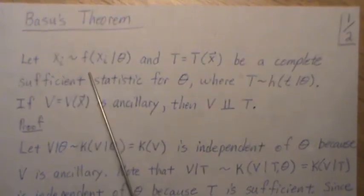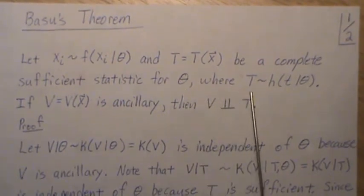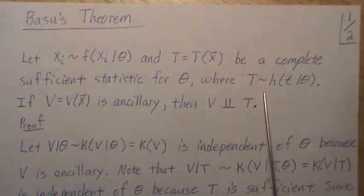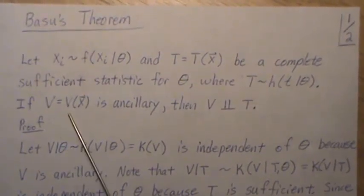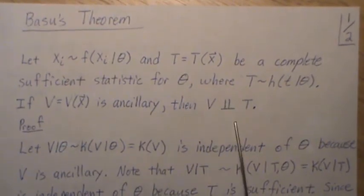Let x be distributed with f and t be a complete sufficient statistic for theta, where t is distributed with some density or distribution h. Now if v is a statistic and ancillary, then v is independent of t.